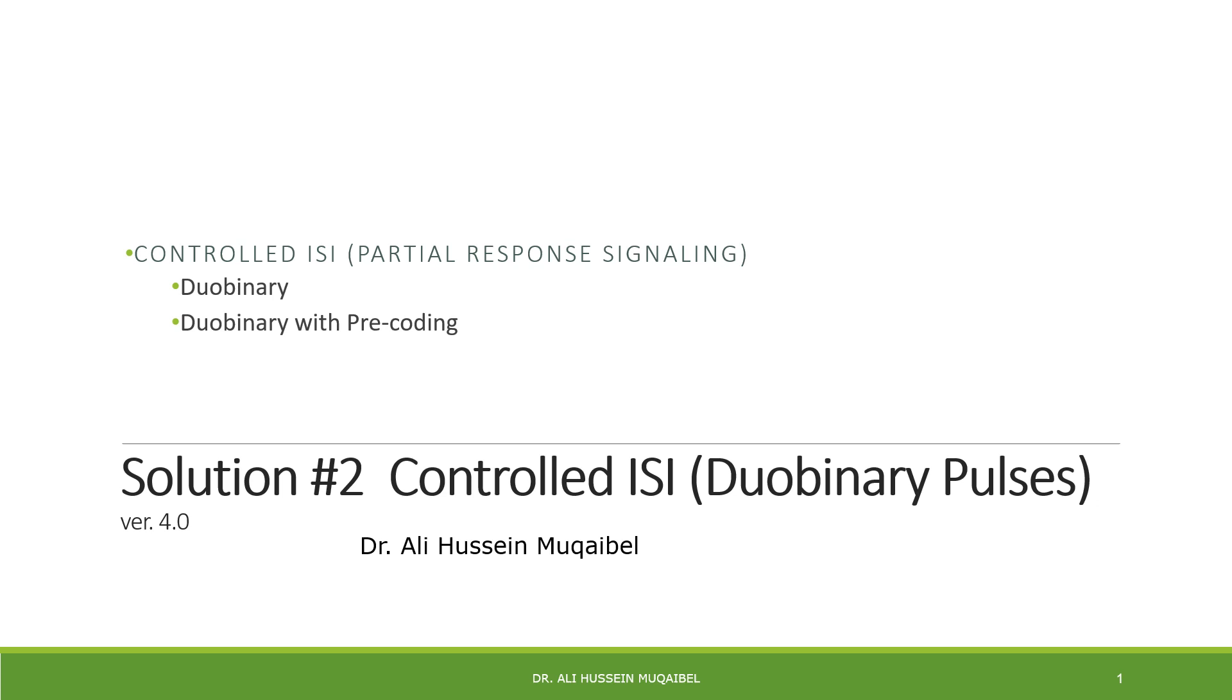Now we look at the second solution for ISI. The problem of inter-symbol interference, we have seen that we can solve it with pulse shaping. Now we look at the second solution, which is entitled controlled ISI. Instead of deleting the ISI, we are going to get control of the ISI. Another name for this is called partial response signaling. We'll cover duobinary signaling and duobinary with pre-coding.